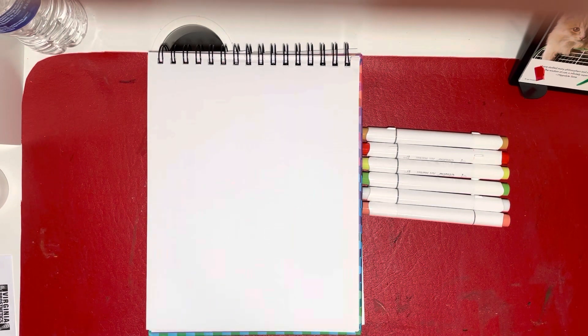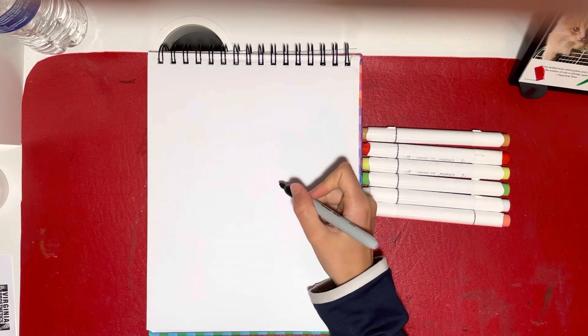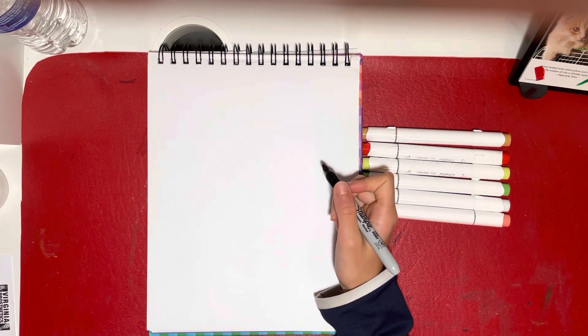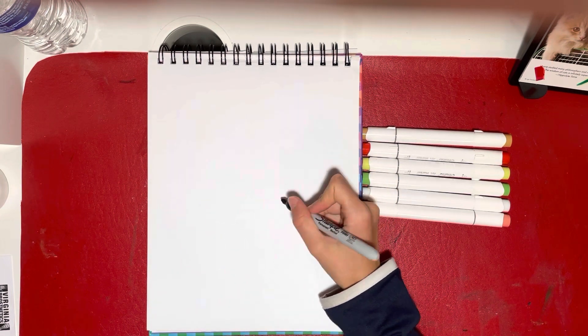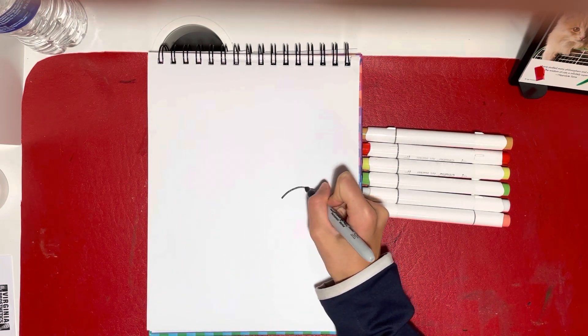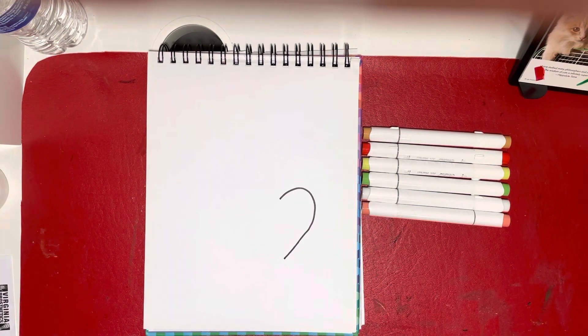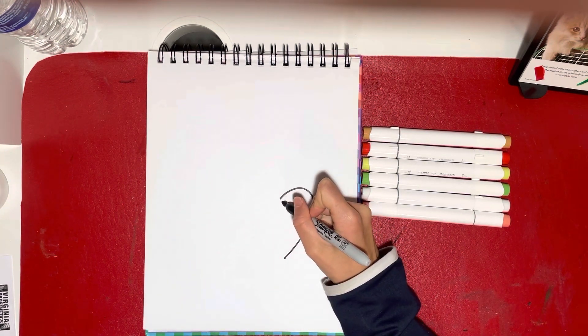So we're going to draw a curvy line sort of on the side of our paper, a little bit down. Nice big handle. And then we're going to repeat the same line.